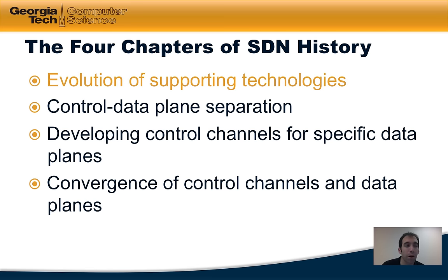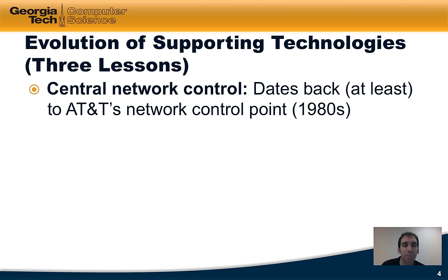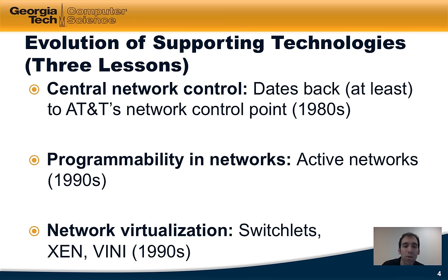Let's start by talking about the evolution of supporting technologies, broken into three lessons. First, we'll discuss the origins of central network control, which dates back at least to the early 1980s in the form of AT&T's Network Control Point, which is still in use today. Next, we'll talk about the history of programmability in networks, traced back to active networks in the 1990s. Then we'll cover network virtualization, described as the killer app for SDN, also with roots in the 1990s.